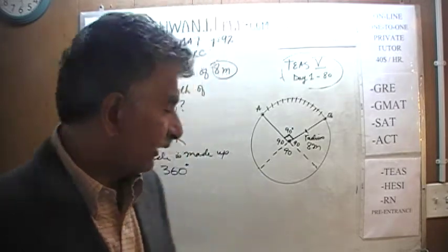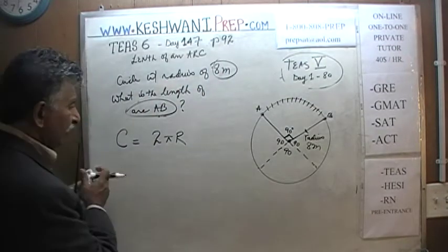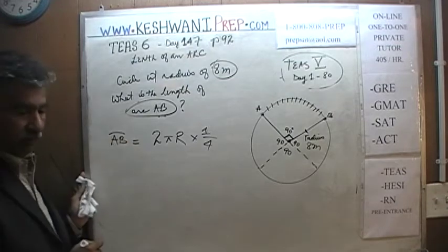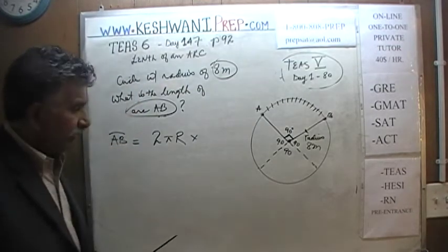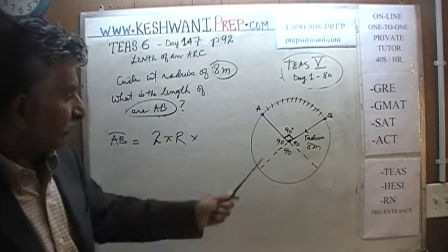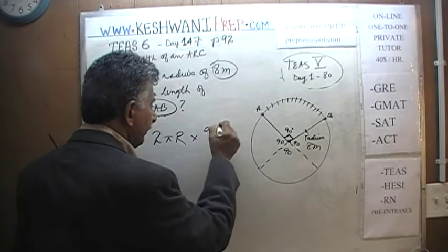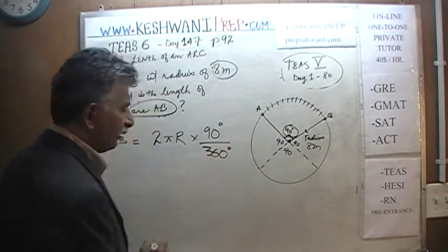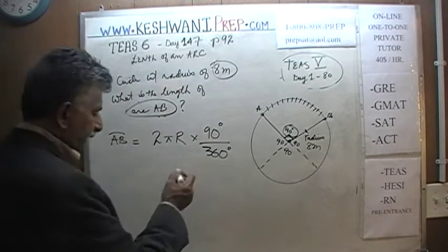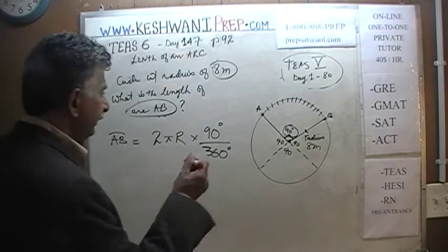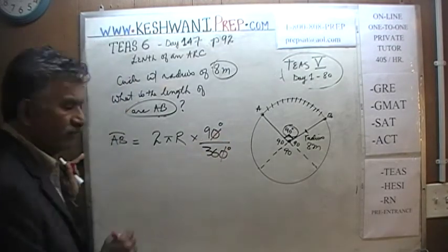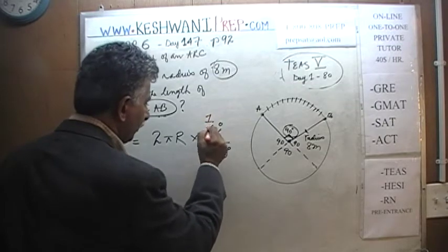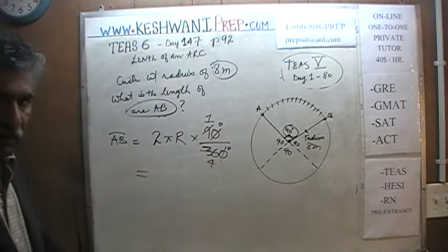How do we arrive at this quarter? We put down the degrees given to us — 90 degrees — and divide that by 360 degrees, which makes up the whole circle. If we divide top and bottom by 10, the zeros cancel out, leaving 9 and 36. Then divide top and bottom by 9: the 9 goes away and 36 becomes 4. So we get 1 over 4, meaning the length of arc AB is one quarter of the circumference, which is 2 times pi times r.